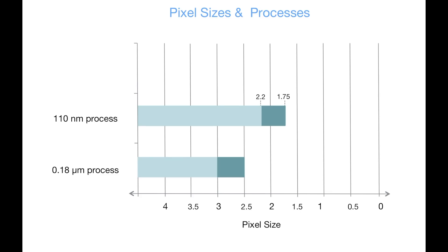In the 65 nanometer node you can take the pixel size all the way down to 1.5 to 1 micron. My personal opinion is that in each process there's an optimal pixel size, so when we discuss pixel sizes with our customers we have to be very careful when that pixel size is too much bigger or too much smaller than a certain optimal value for a given process.